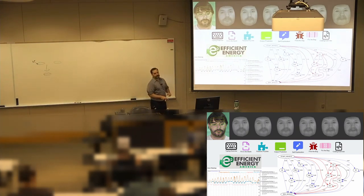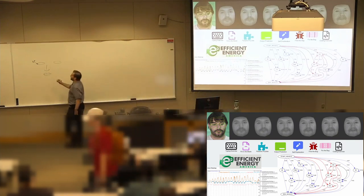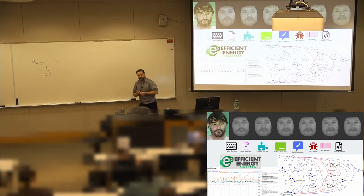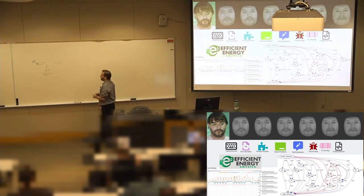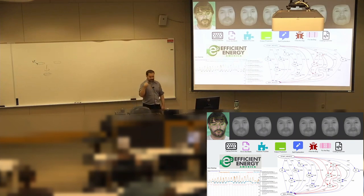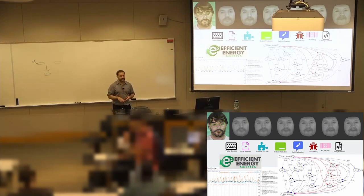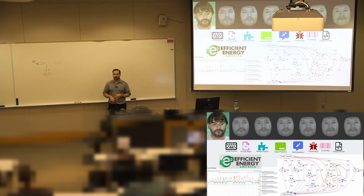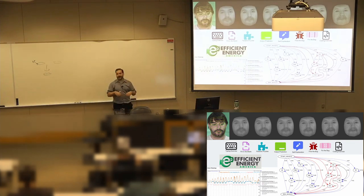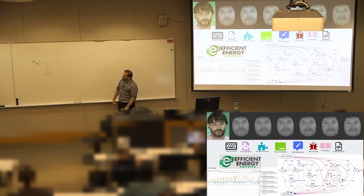If I get a bunch of those coordinate points across many people, I can find the average position of each specific point. What we ended up doing is breaking that down by demographics: gender, ethnicity, and even some drug use. So it's not just the average face, but the average Caucasian male, the average Asian female — things like that.